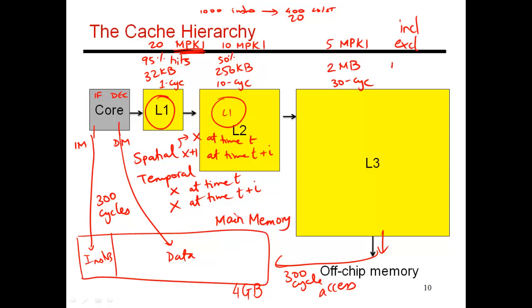And between these two is what is called a non-inclusive hierarchy, where there really are no guarantees. So if data is found in L1, there is no guarantee that you're going to have a copy of data in L2 as well. So it's somewhere between these two extremes.